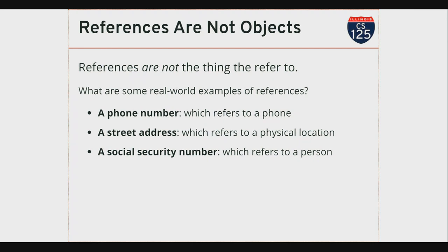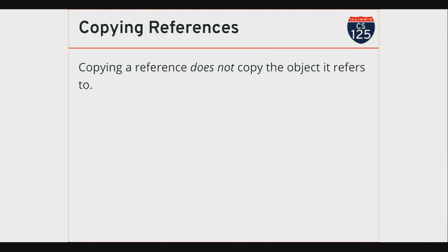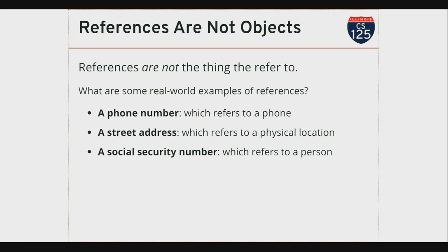Questions about this, now that we have some physical analogs? Good question: how do I copy an object in Java? Let's say I actually want a copy of the object, not just a copy of the reference. First of all, let me reinforce the fact that copying a reference does not copy the object. If I give one person a copy of my phone number and you make ten copies of it, I only have one phone. If I make one copy of my street address and you make ten copies of it, I only have one house.